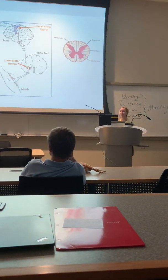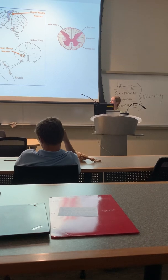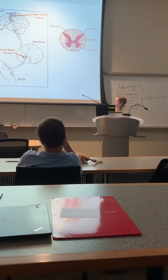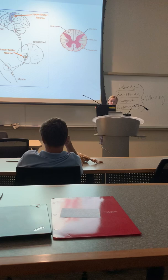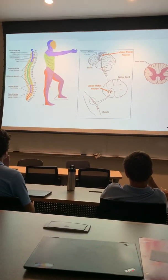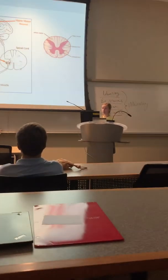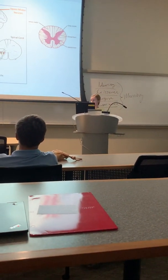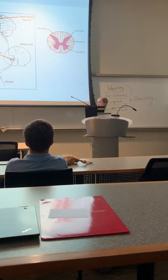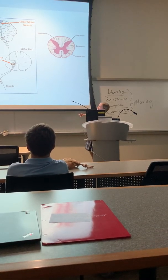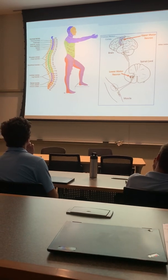AFM has a really unique pattern of damage with the spinal cord. On the diagram on the left, this shows the four sections of the spinal cord: the cervical, thoracic, lumbar, and sacral. I have damage from cervical 2, or C2, to T1, or thoracic 1, as you can see on the diagram, which is a really large section of the spinal cord to be damaged.